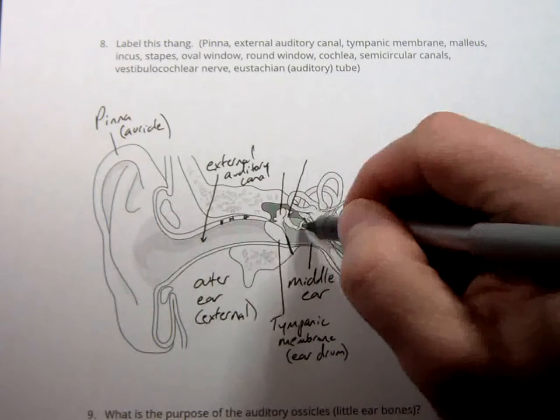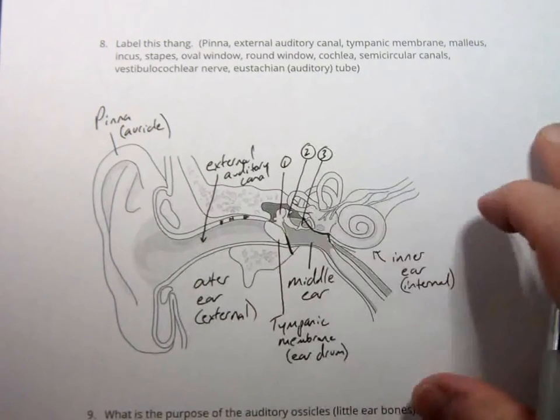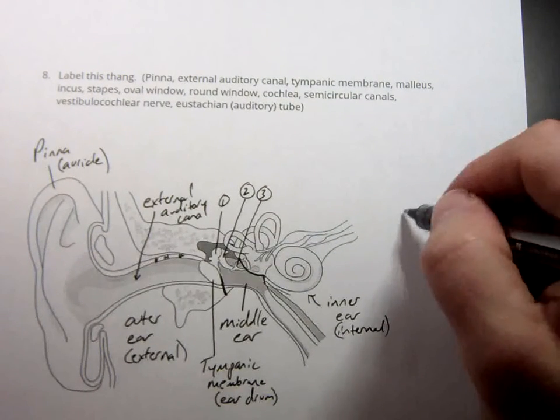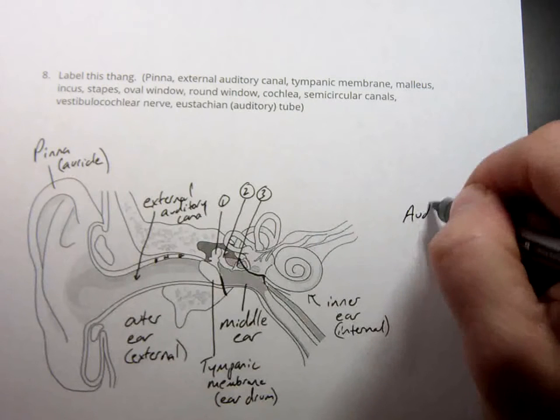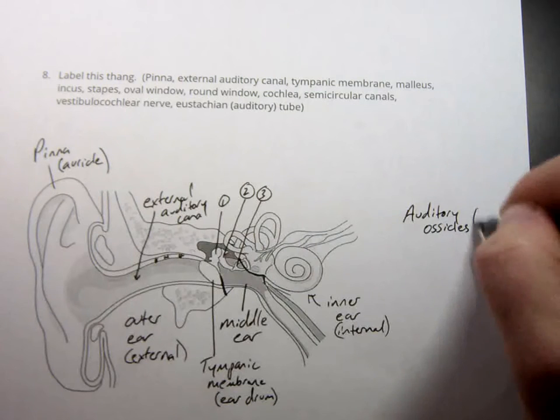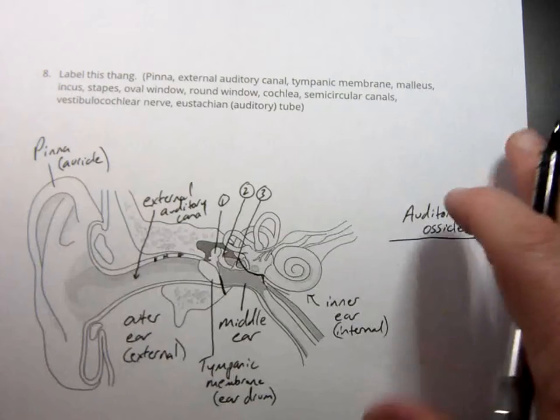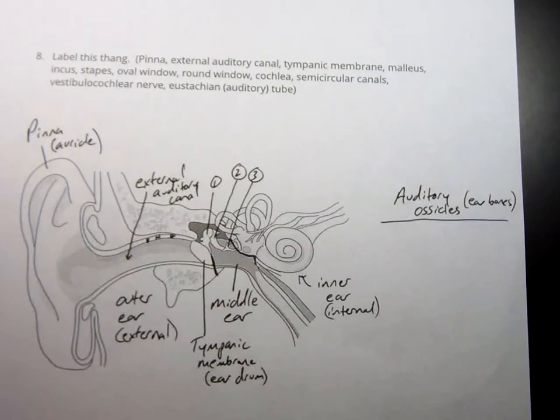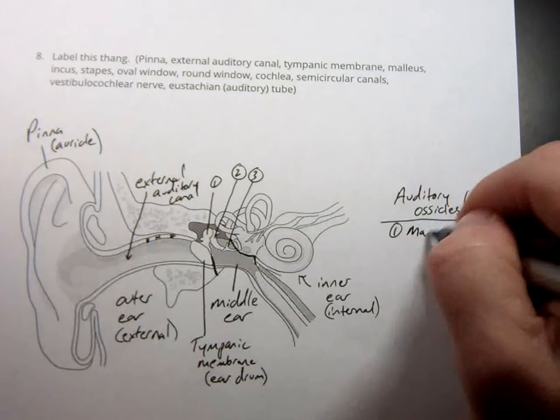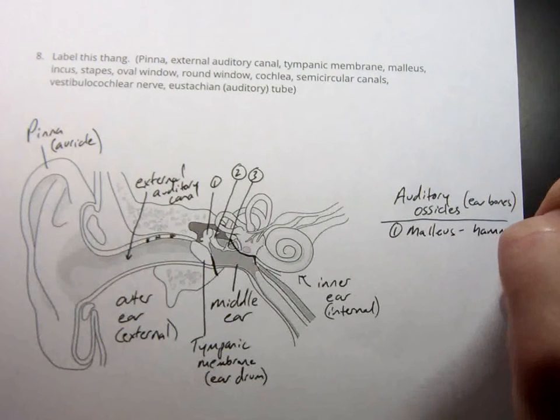And we'll label those where we have just a little bit more room over here. Those guys are known as the auditory ossicles. In other words, ear bones. These are by far the smallest bones in the human body. Number one is the first one. It's called the malleus. Sometimes called the hammer. It's like mallet.